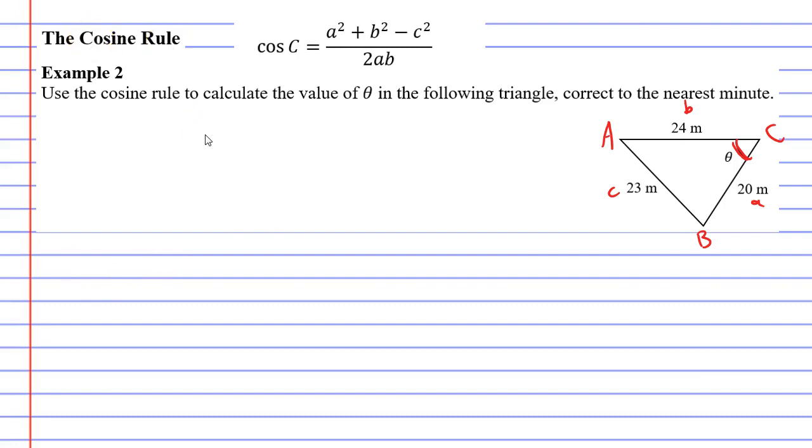Now we can just copy our formula down and we can substitute our values into this formula. Capital C is now theta, so we'll change it for theta. Lowercase a is the number 20, so we have 20 squared at the top. Lowercase b is 24, so 24 squared at the top. And lowercase c is 23, so 23 squared at the top of our fraction. At the bottom of our fraction we're going to have 2 times a times b, a being 20 and b being 24.